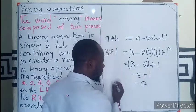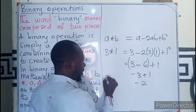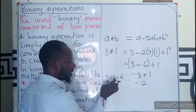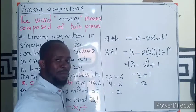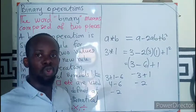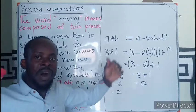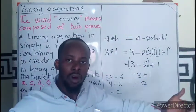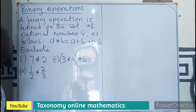We can verify this by reordering: handling the addition first gives 3 plus 1 minus 6, which is 4 minus 6, still giving negative 2. So under binary operation, we take operators on the left defined using known mathematical operations on the right to solve certain questions.